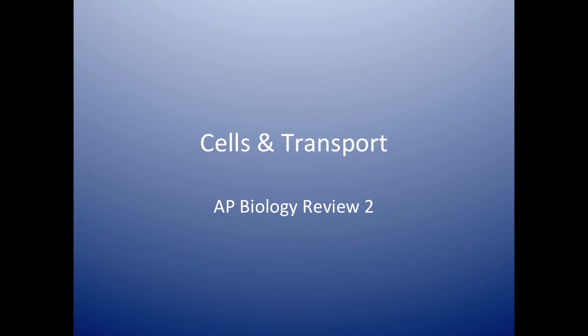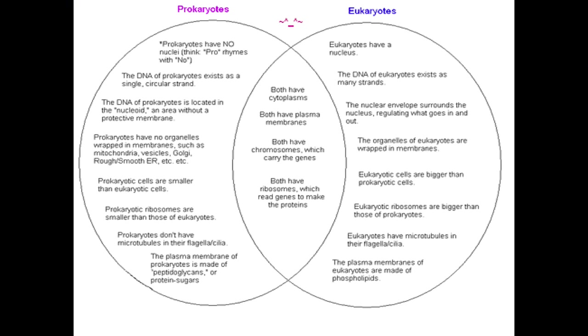This video will discuss the AP Biology Review Part 2, and it's going to discuss cells and transport. There are two types of cells you should be aware of for the AP Bio exam: Prokaryotes and Eukaryotes.